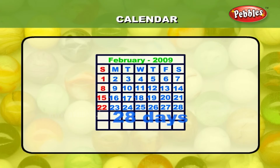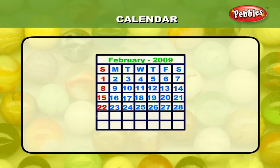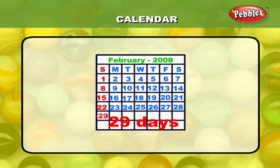February usually has 28 days in the month, but once in 4 years it has 29 days, and that year is called the leap year.